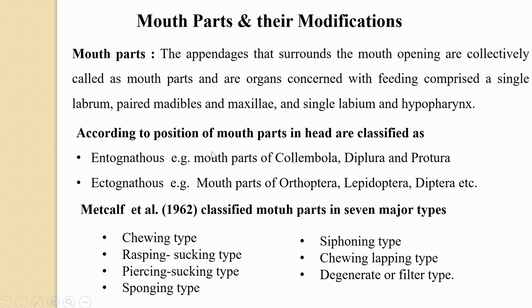First of all, what exactly are mouth parts? Mouth parts can be defined as the appendages that surround the mouth opening, collectively referred to as mouth parts. These are the organs concerned with feeding, comprising an unpaired labrum in front, a median hypopharynx, a pair of mandibles and maxillae from the lateral side, and the labium forming a lower lip. So the mouth parts collectively include the labrum, a pair of mandibles, a pair of maxillae, a single labium, and at the center the hypopharynx.